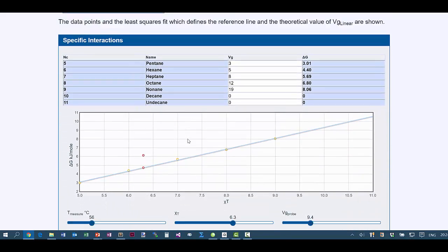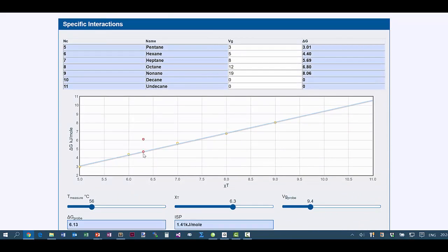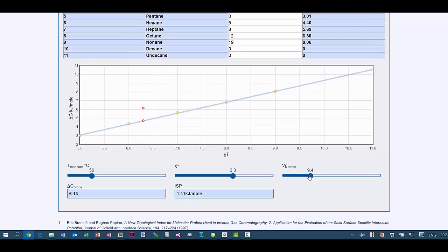We have the same experiment. The toluene should come out at 6.3, but in fact the Vg is 9.4, which gives a delta G of 6.1. The difference in free energy is 1.4 kJ per mole.